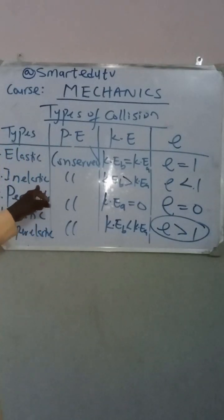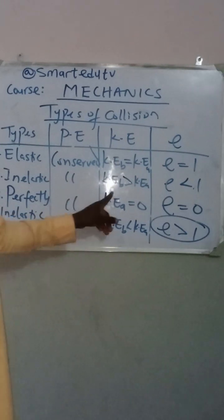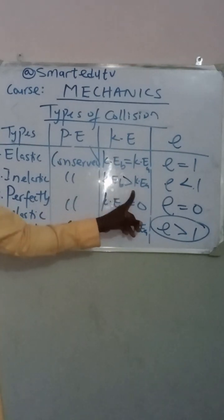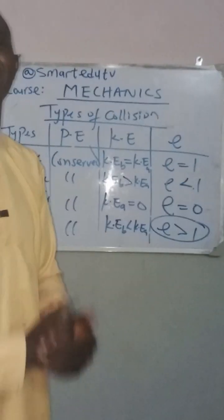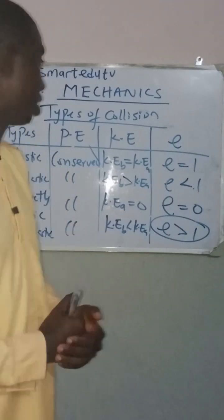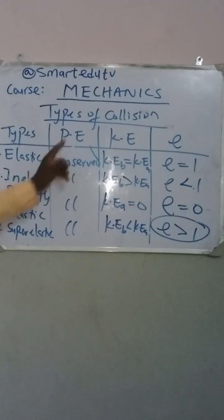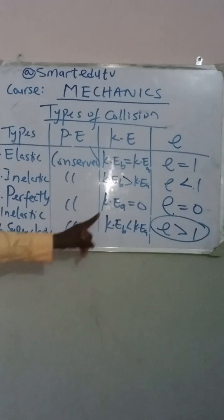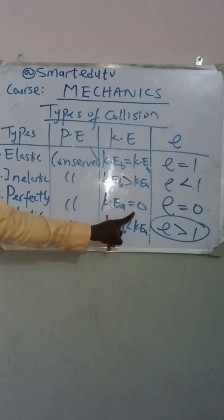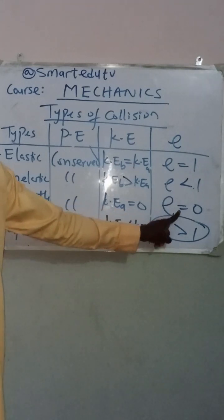For inelastic collision: potential energy is also conserved, kinetic energy before collision is greater than kinetic energy after collision, and the coefficient of restitution E is less than 1. For perfectly inelastic collision: potential energy is conserved, kinetic energy after collision equals 0, and the coefficient of restitution E also equals 0.